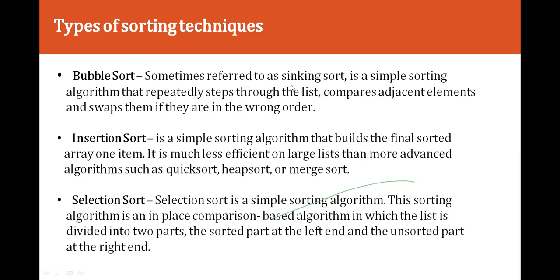Bubble sort, also referred to as sinking sort, is a simple sorting algorithm that repeatedly steps through the list, compares adjacent elements, and swaps them if they are in the wrong order. Insertion sort is a simple sorting algorithm that builds the final sorted array one item at a time. It is much less efficient than more advanced algorithms such as quick sort, heap sort, or merge sort.